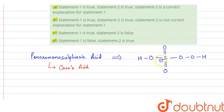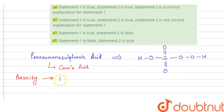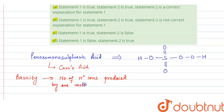Now we have to check the basicity of this acid. Basicity of an acid is defined as the number of hydrogen ions which one molecule of an acid can produce — that is, the number of H⁺ ions produced by one molecule of an acid.